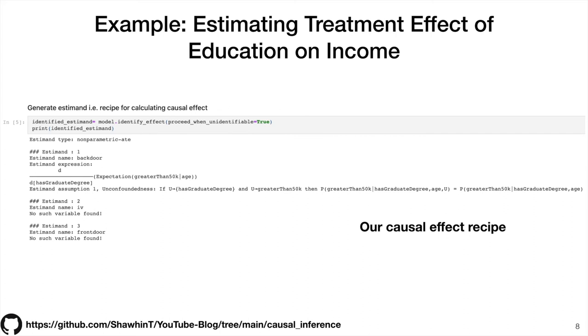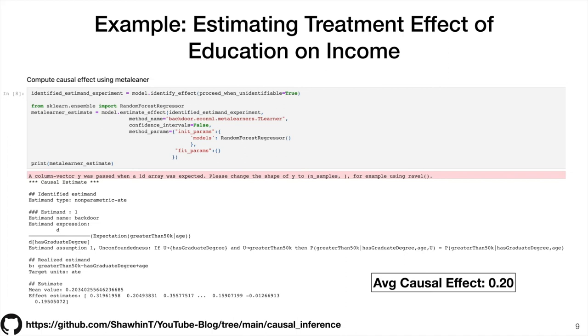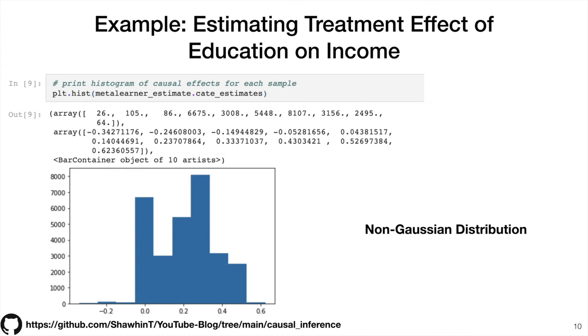Here we're using a T-learner, which is a type of meta-learner. I can link a paper talking about meta-learners in the description. I won't jump into all the details. I'll just jump to the result, which is the average causal effect is 0.2. One way to interpret this is having a graduate degree increases your chances of making more than $50,000 a year by 20%. However, we had a lot of samples in this data set, and we've just reduced all those samples to a single number, the average, which may not always be the most representative number. It's always good to plot the distribution.